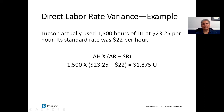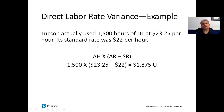For the direct labor rate variance example, Tucson actually used 1,500 hours of direct labor — those are the hours paid to direct labor during the period. The direct labor rate was $23.25 per hour, and the standard rate we computed before is $22 per hour. We're going to first compare the rates: actual rate minus the standard rate.